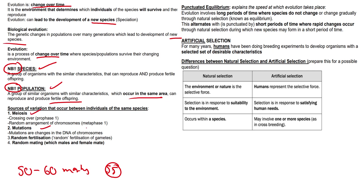The sources of variation that occur between individuals of the same species include meiosis, mutations, random fertilization, and random mating. We've already covered meiosis — prophase one, metaphase one. Mutations are changes in the DNA of chromosomes; for example, when COVID-19 was mutating, the disease was changing and we were getting new variants.